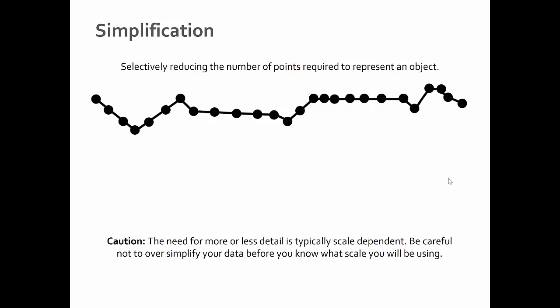To start we have simplification. Simplification is selectively reducing the number of points required to represent an object. You see this all the time in GIS. You import a shapefile and it's comprised of a million little points all the way around a lake, for example. Not all those points are necessary, particularly if you have a small scale map. You can simply eliminate most of those points and still have a fairly detailed representation of the data.